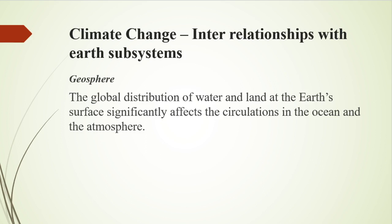Next is climate change interrelationships with earth subsystems. First, the Geosphere: the global distribution of water and land at the earth's surface significantly affects the circulations in the ocean and atmosphere. Plate tectonics contribute to the development of climate and to changes in the global environment. Volcanic eruptions, even though local in origin, can affect the earth's system as a whole. Volcanism is considered another cause for climate change.